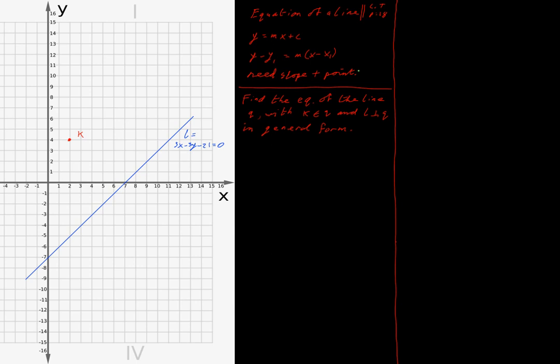Let's put this into practice now. I have a situation here where I find the equation of the line q, where k is an element of q and l is perpendicular to q in general form. So, find the equation of the line in general form, given these restrictions.